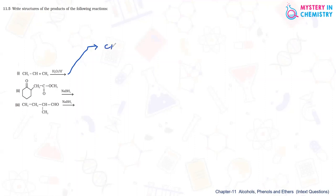The product is CH3-CH(OH)-CH3. The OH is the negative part and it goes to the carbon atom where hydrogen is less, following Markovnikov's rule. So the final product is isopropyl alcohol.